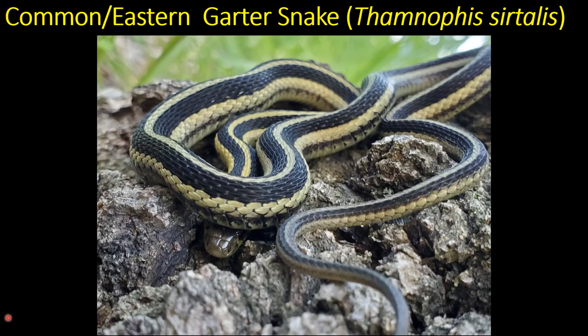Let's get into the first species — we'll start with the common or eastern garter snake. First thing: it's 'garter,' G-A-R-T-E-R. People often say 'garden snake' or 'gardener snake,' which is fine, but these are a garter snake species in the genus Thamnophis. This is Thamnophis sirtalis, known by the common garter, eastern garter, or red-sided garter snake — several common names that all refer to the same species.